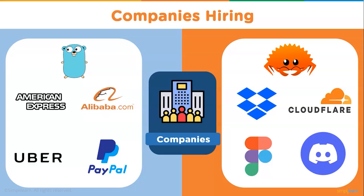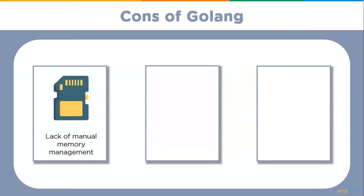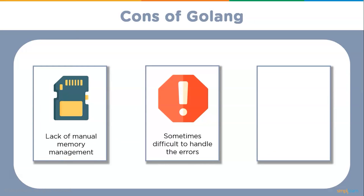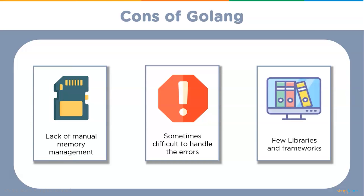Now let's look at some cons of Golang. First, there is a lack of manual memory management. Sometimes it becomes difficult to handle errors while using Golang. There are also few libraries and frameworks — no major frameworks exist for Golang developers, unlike Ruby with Ruby on Rails, Python with Django, or PHP with Laravel.